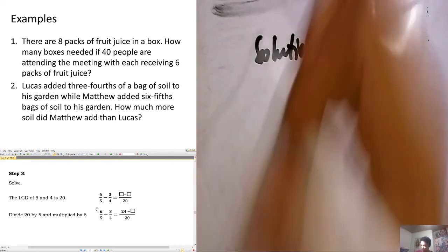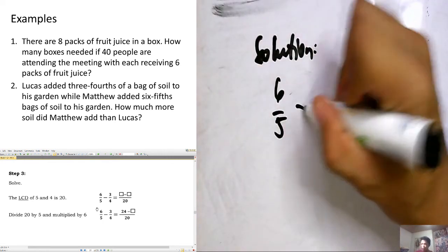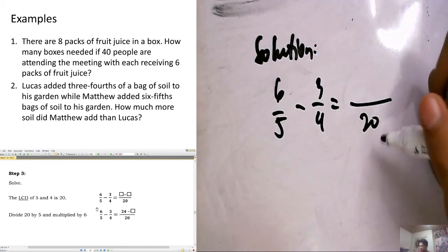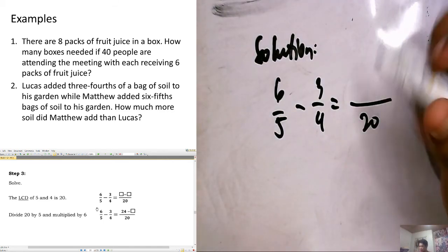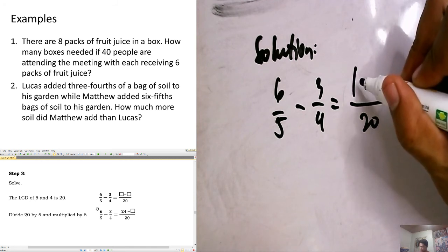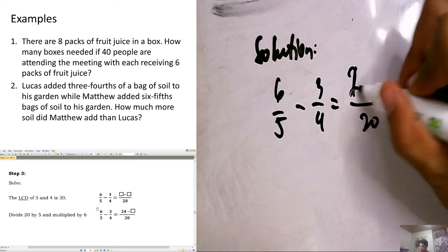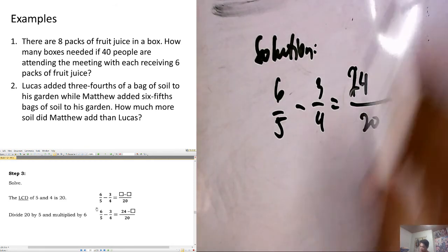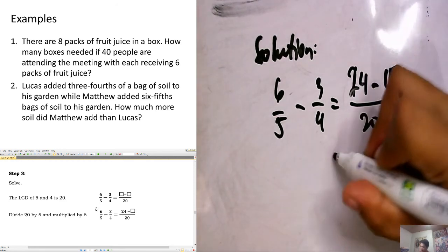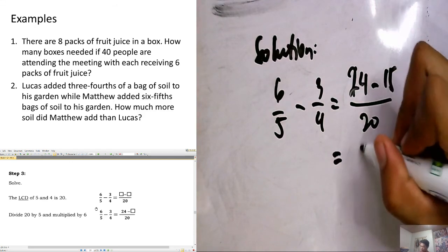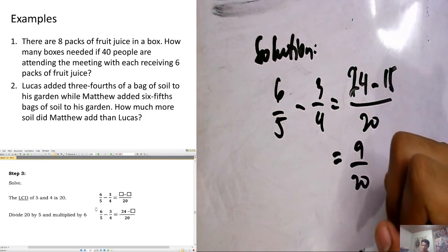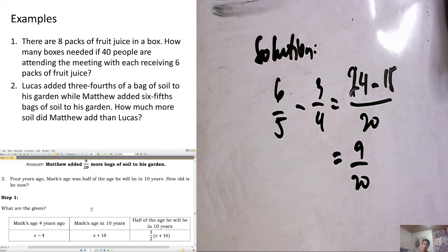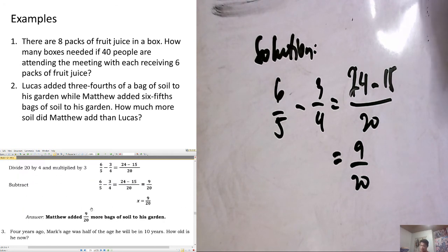The correct solution is: 6/5 minus 3/4. The LCD is 20. 20 divided by 5 is 4, times 6 is 24. 20 divided by 4 is 5, times 3 is 15. 24 minus 15 is 9, over 20. Sorry for the error, class — the answer is 9/20.